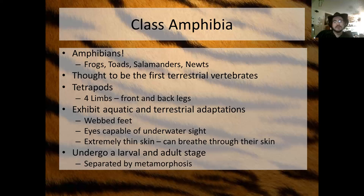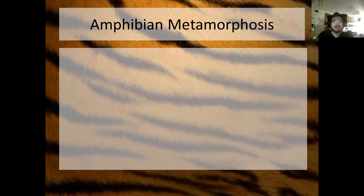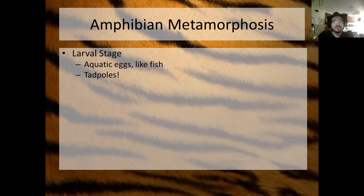The tadpole's whole job is to avoid getting eaten and eat enough food to get enough energy to metamorphose. When a larval amphibian undergoes metamorphosis — unlike an insect that makes a cocoon — it grows out the adaptations needed for terrestrial life. It gets limb buds growing and starts to grow back legs. The larval stage has aquatic eggs that hatch into tadpoles with gills, fins, a swimming tail, and no legs.